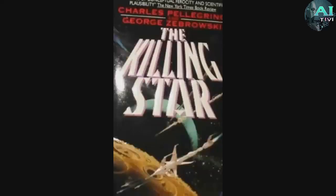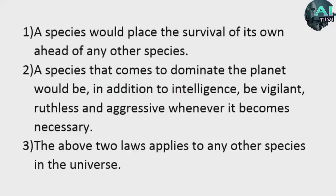Ok now we'll get into some of the miscellaneous matters which apply to Dyson Dilemma and the Fermi Paradox in general. Back in the mid 90's there was a book called The Killing Star that came out and one of its premises was that when we summed up everything we knew about alien behavior there were only three things we could say with any degree of certainty and not even certainty just at least a certain amount of confidence. Number 1: A species would place the survival of its own ahead of that of any other species. Number 2: A species that comes to dominate the planet would, in addition to intelligence, be vigilant, ruthless, and aggressive whenever it became necessary. Number 3: They would assume that the above two laws apply to any other species in the universe.